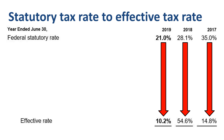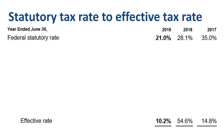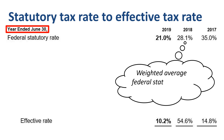But wait a minute! The US never had a statutory tax rate of 28.1% — it went from 35% to 21%, with no step in between. Time to read the small print. Microsoft's fiscal year runs from July through June, so 28.1% is the weighted average federal statutory rate from July 2017 to July 2018 — very close to the average of the old and new tax rate: 6 months at the old rate, 6 months at the new rate.